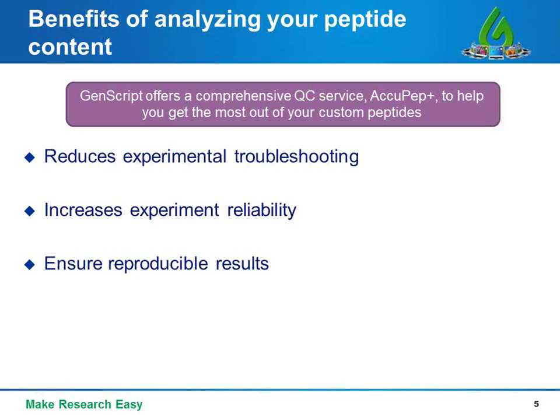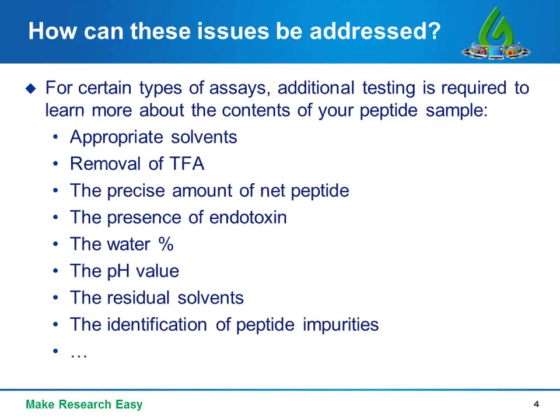To address these issues, I'd like to start with a real case. When doing my PhD, I once purchased the same peptide from two different companies for a kinetic study, but the experiments failed due to an unexpected reaction rate. I had no idea at the time and spent plenty of time trying to solve this problem until I started working at GenScript, where I realized I barely understood the composition of the delivered peptide sample.